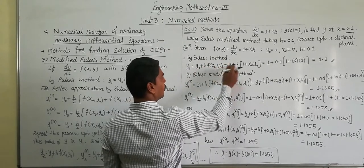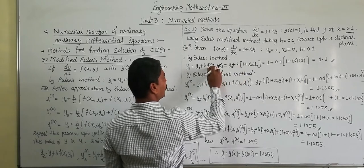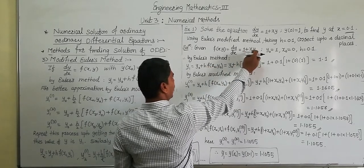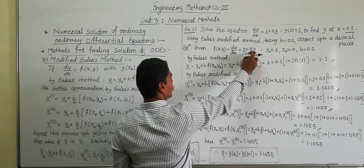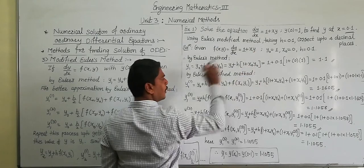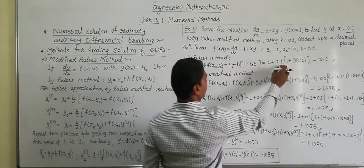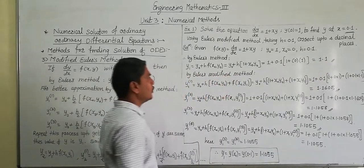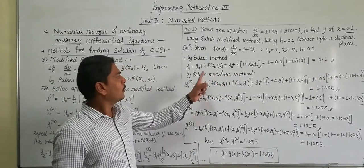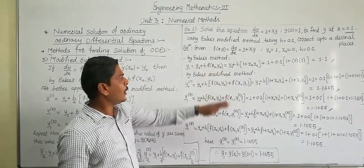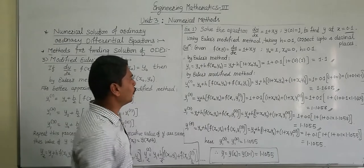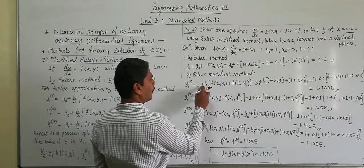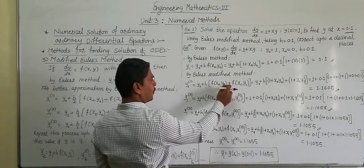By Euler's method, we first compute y1. Now we apply the Modified Euler's method. y1 raised to 1 becomes y0 plus h into f of x0 comma y0, which gives the initial approximation.